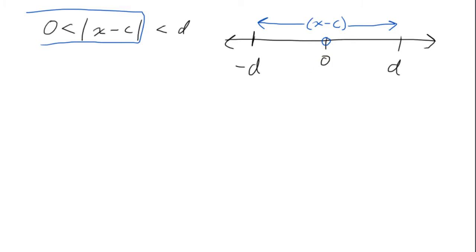We can also look at this other part, this other piece. The absolute value of x minus c is less than d so that means that x minus c, the quantity x minus c, has to be inside of negative d and d. That is, it cannot be farther out from the origin than d units.